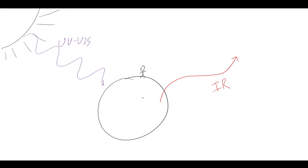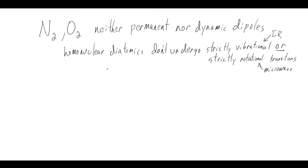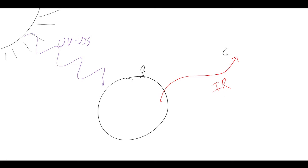But what happens if we add non-homonuclear or non-symmetric molecules to the atmosphere? The most well-known example is CO₂. CO₂ has a dynamic dipole, so if we add CO₂ to our atmosphere, it interacts with this outgoing IR light - not via a permanent dipole (which matters for rotational motion) but via a dynamic dipole, because the unequal charge distribution has a time dependence when this asymmetric vibration is occurring.